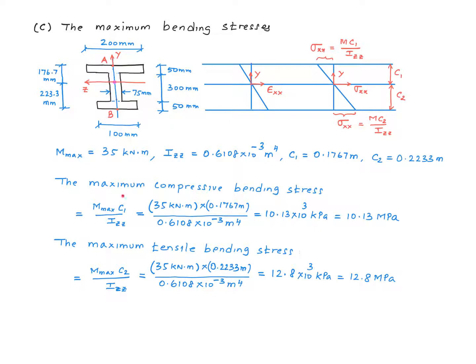So we calculate the maximum compressive bending stress to be 10.13 MPa and the maximum tensile bending stress to be 12.8 MPa. Because of the fact that the cross-section is non-symmetric about the z-axis, these two values are not the same. Tensile stress is a little bigger than the compressive stress.